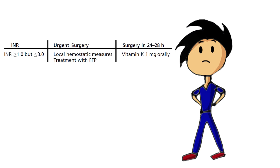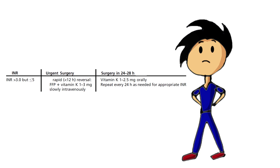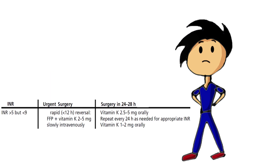If INR is between 1 and 3 in urgent cases, local hemostatic measures with FFP can be used. If surgery can be delayed, vitamin K 1 mg orally can be given. If INR is between 3 and 5, for rapid reversal use FFP or vitamin K 1–3 mg slow intravenous infusion; if surgery can be deferred, vitamin K 1–2.5 mg orally while repeating INR. If INR is more than 5 but less than 9, for rapid reversal administer FFP with vitamin K 2–5 mg slow intravenous; if surgery can be deferred, vitamin K 2.5–5 mg orally with INR checked every 24 hours.